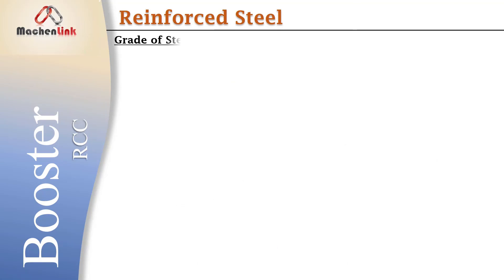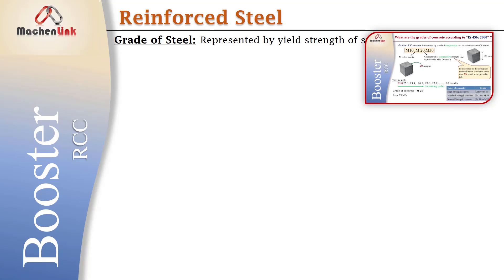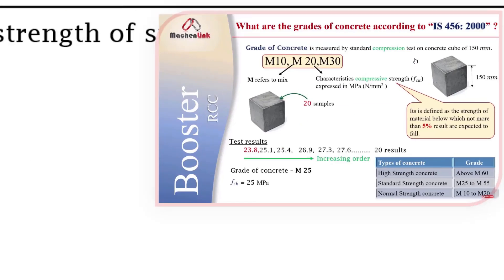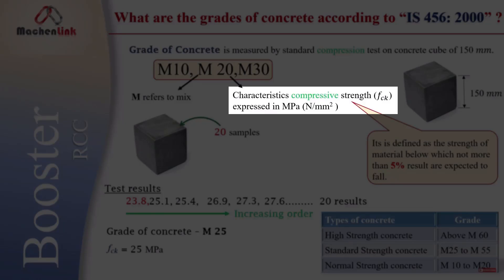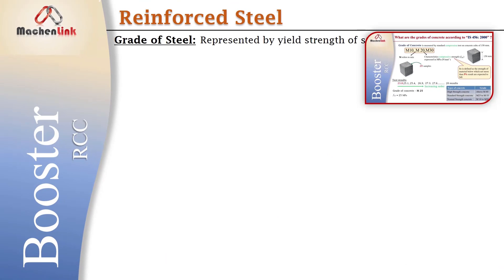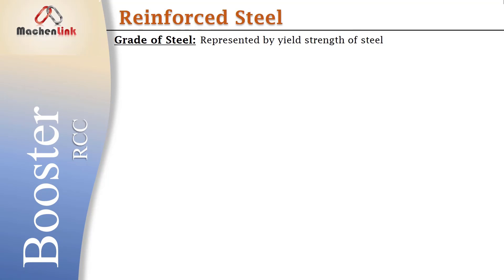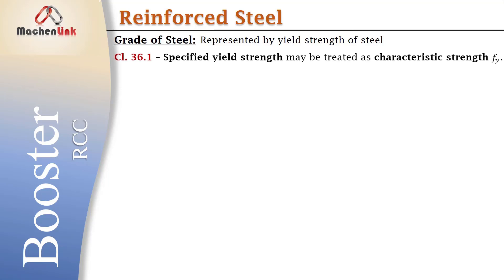Now let's move on to the grade of steel. To represent the grade of steel, we use yield strength of steel. As in the previous RCC booster, we defined compressive strength as characteristic strength. Similarly, in the case of steel, as per clause 36.1 of IS code, yield strength may be treated as characteristic strength, or FY. Let's take a closer look at each grade of steel.